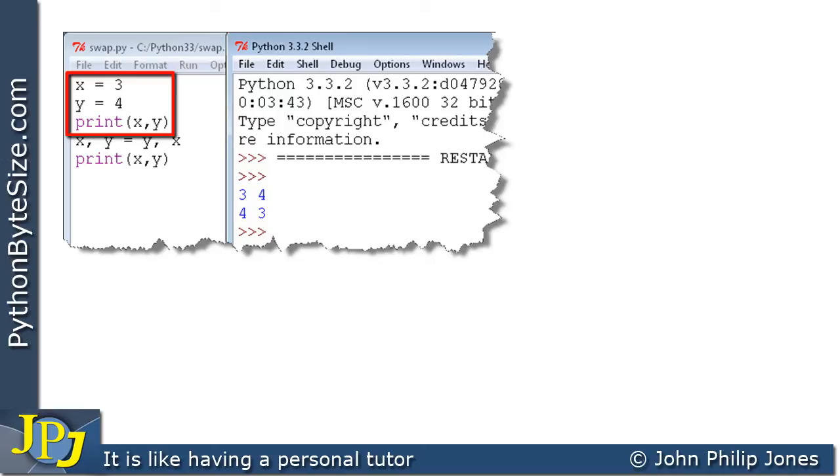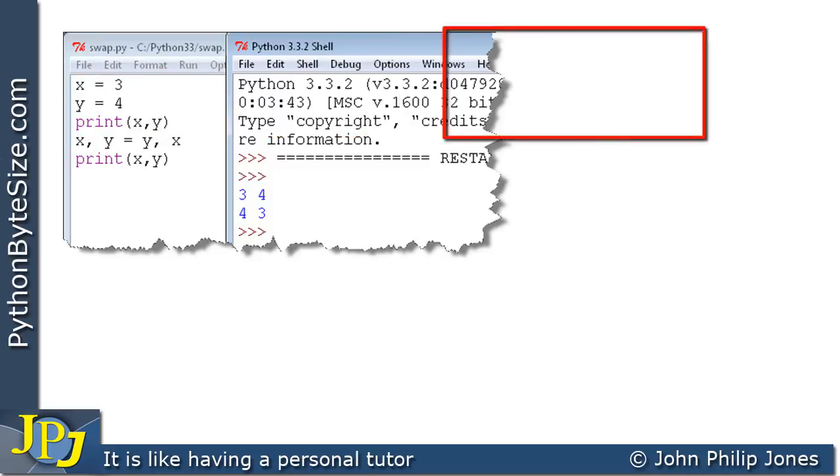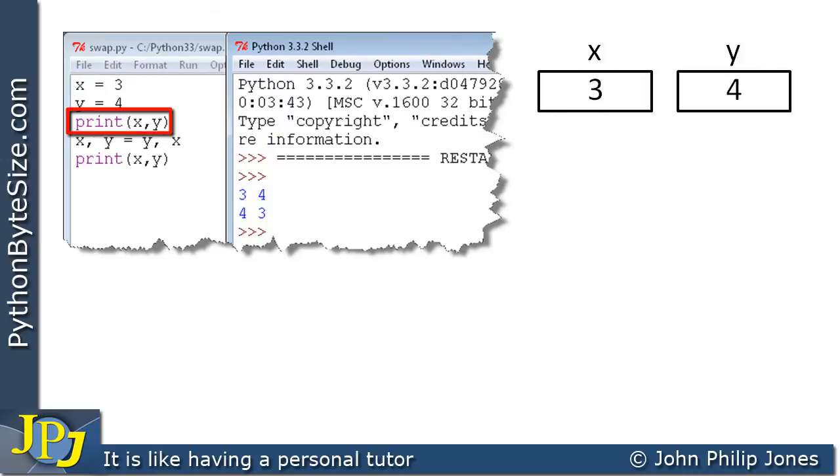So in effect, what will happen, we will get the variables x and y being created, as you can see here. And then of course, we print x and y, and we'll get 3, 4 being produced here.